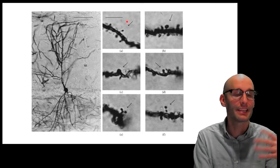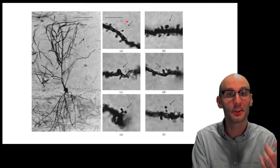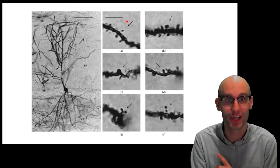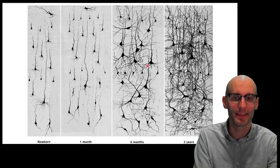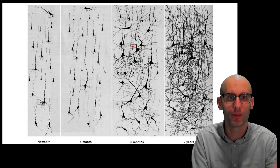Now, the interesting thing about the silver stain is it actually only stains one in a hundred neurons. It doesn't stain all the neurons. Now, that's really important. Now, if we go back to this, if we were to see all the neurons, it would just be black.